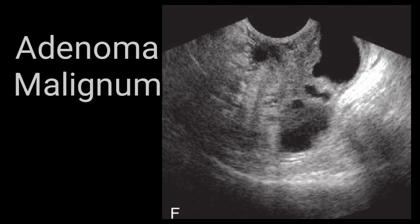There is a special rare cancer called adenoma malignum, also referred to as minimal deviation adenocarcinoma. Its characteristic appearance is a cystic mass. In the cervical region, multiple cystic lesions called Nabothian cysts are common, so you may confuse them with adenoma malignum. The key distinguishing feature is that when there is a solid component within the cystic lesion, you should think of adenoma malignum rather than a simple Nabothian cyst.